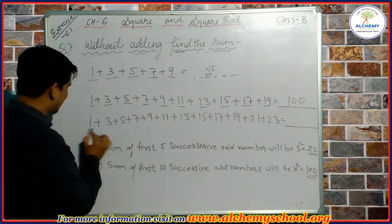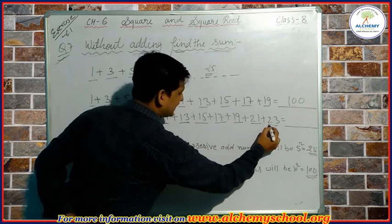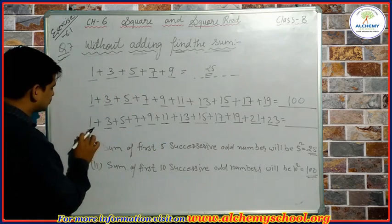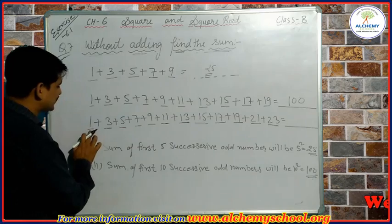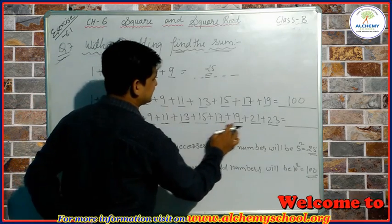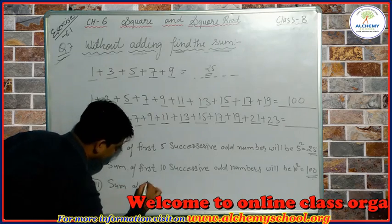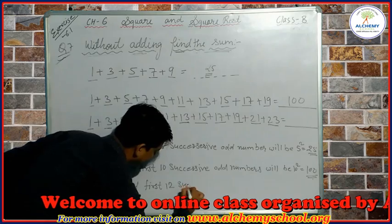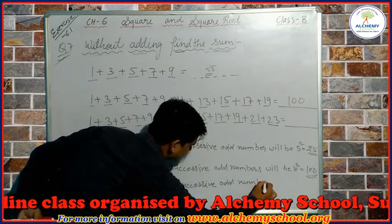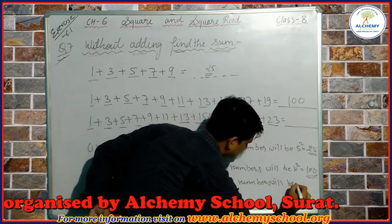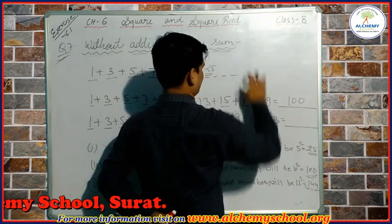When we observe the next set of numbers — 1, 3, 5, 7, 9, 11, 13, 15, 17, 19, 21, and 23 — these are also odd numbers. To find their sum, we count how many successive odd numbers there are: 1, 2, 3, 4, 5, 6, 7, 8, 9, 10, 11, and 12. So we can write that the sum of the first 12 successive odd numbers will be 12 square, which is equal to 144.